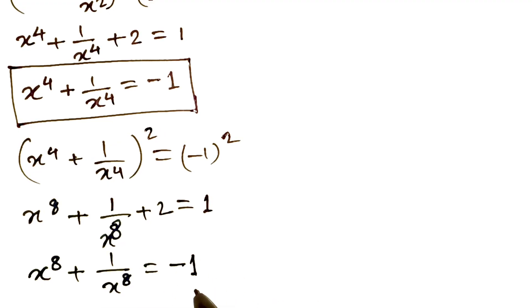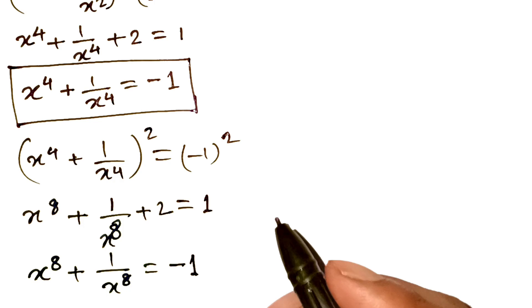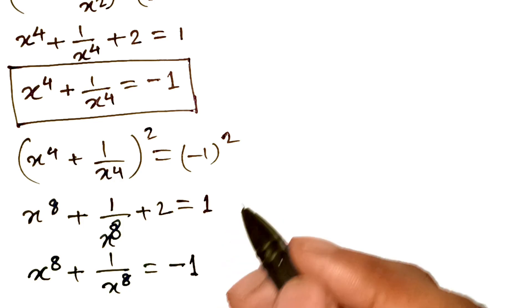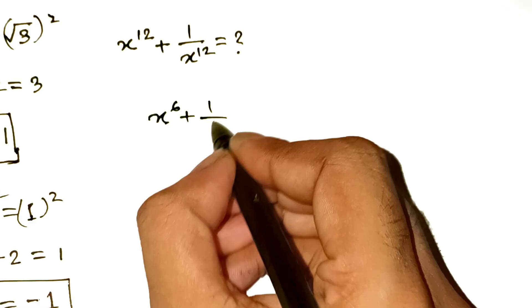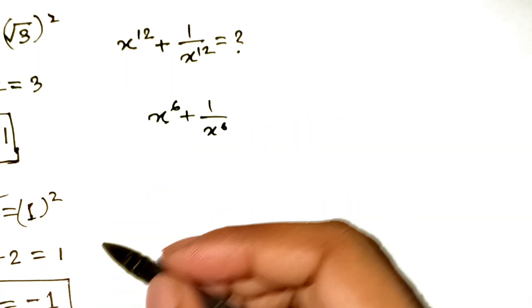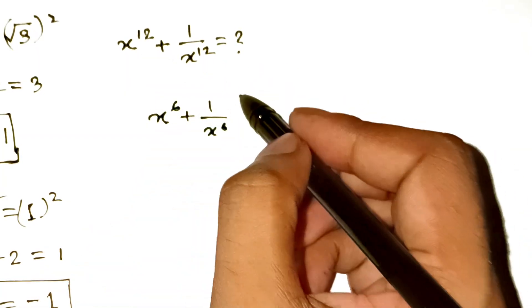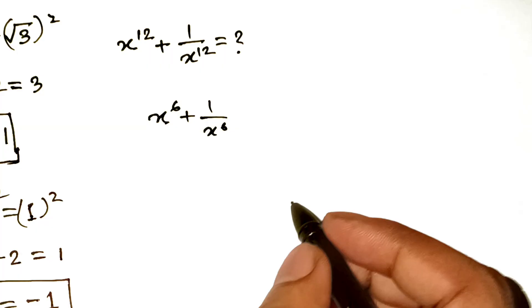Interesting, right? The values are kind of bouncing around. But hold up! We also need x to the power 6 plus 1 over x to the power 6 somewhere in the middle because 12th power will come from squaring the 6th power result. So here's a cool trick.